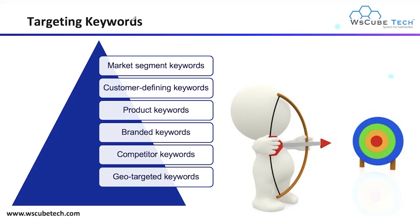Here we have targeting keywords, keyword by length, on-site keywords, Google Ads keywords, and buyers keywords. These are some types of keywords. Let's discuss them one by one — what these types are and what forms we will learn about each particular type.